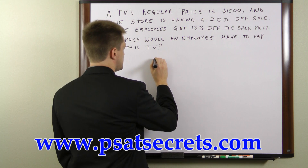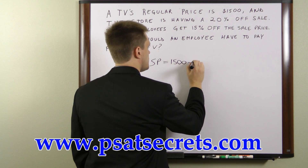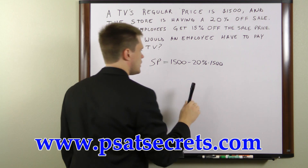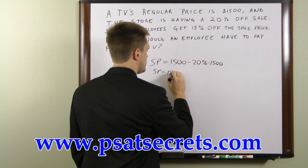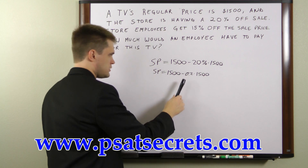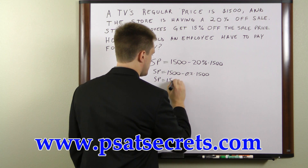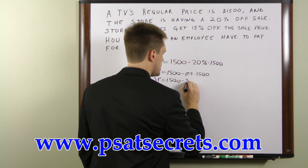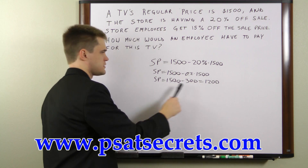To do this, we're going to find the sale price: sale price equals $1,500 minus 20% times $1,500. We can rewrite this with a decimal as sale price equals $1,500 minus 0.2 times $1,500, which gives us a sale price of $1,200.